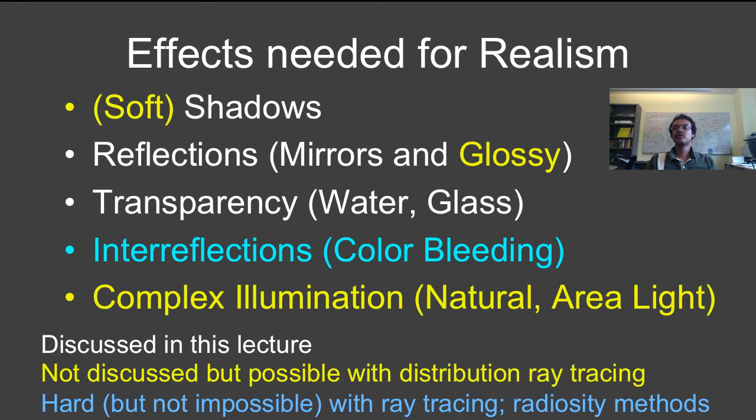So, what are the effects needed for realism? We, earlier in this lecture, talked about them. Soft shadows, reflections from mirrors and glossy surfaces, transparency of water and glass, interreflections and color bleeding, complex illumination, natural and area lights. The portions in white—that is shadows, mirror reflections, transparency—have been discussed in this lecture in the context of recursive ray tracing and are supported by recursive ray tracing.